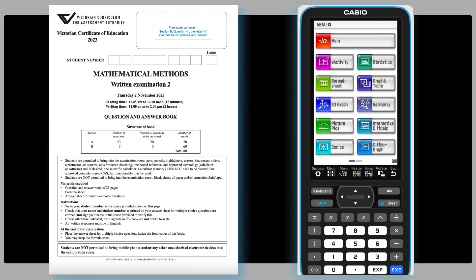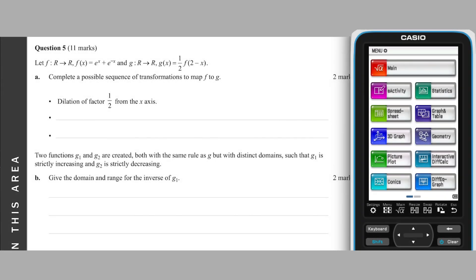This video will present solutions to the VCE 2023 Mathematical Methods written Examination 2, Section B Question 5. This question starts by defining two functions F and G. Because they will be used extensively throughout the question, I will take a moment to define them in my ClassPad.